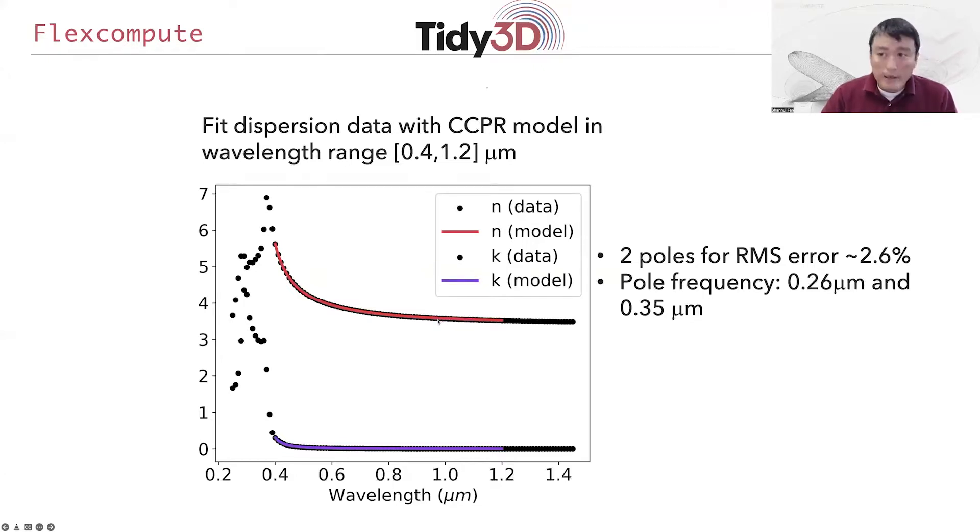In Tidy3D, you can find a utility that allows you to do this fit. Here, the dots are the data taken from standard reference, usually determined experimentally, and the solid line here is the fit as we determined here. As we mentioned, this fit is important and necessary in order to use the FDTD method to describe dispersive material. On the other hand, using a relatively small number of poles, it is possible in most cases to provide a fairly accurate description of the material dispersion over a fairly wide range of frequencies.